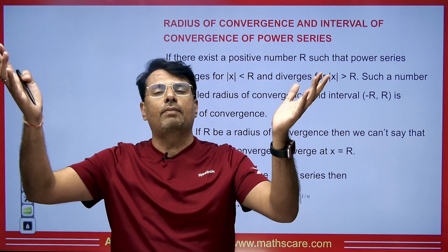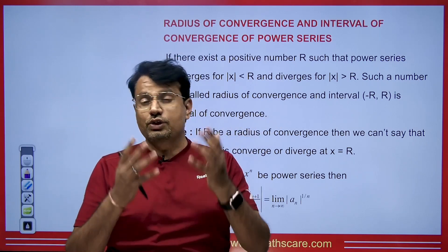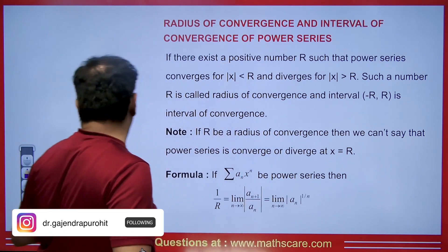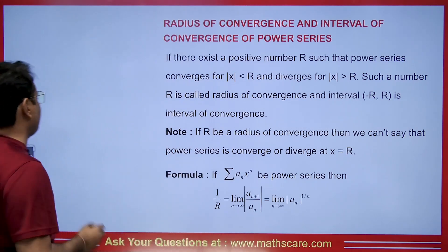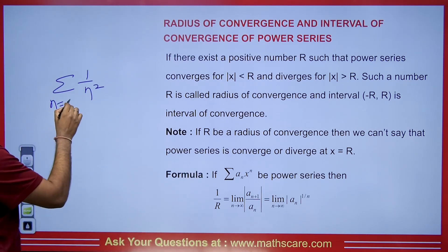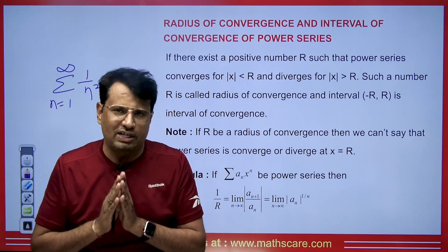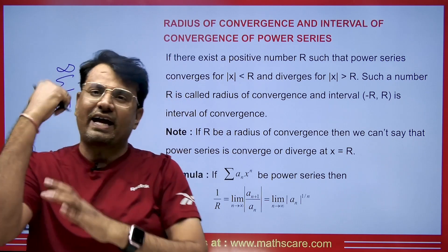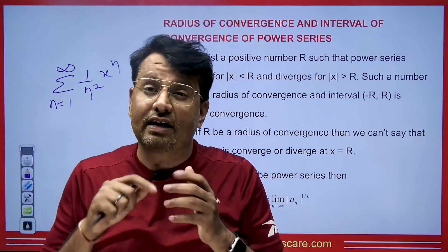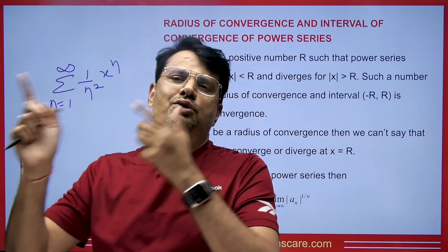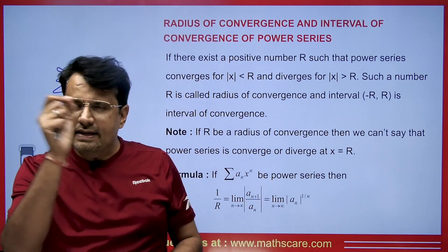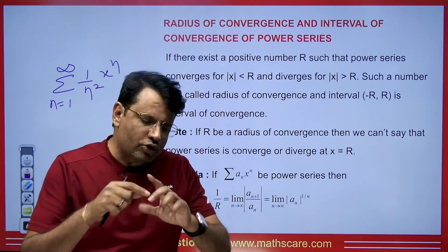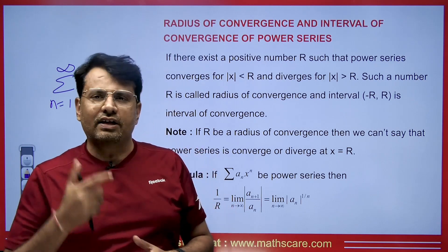Either we have a series that is convergent throughout all real numbers — in that case, its radius of convergence will be infinite. Or, in some series containing the variable x, convergence depends on the value of x. The range of x for which the series is convergent gives us the interval, and the radius of that interval is what we call the radius of convergence.